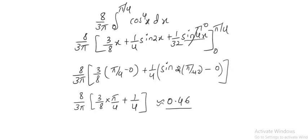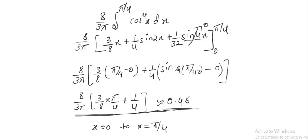This is the probability of finding the particle from x equals 0 to x equals pi by 4. That is it for now. If you have any doubts, please let me know in the comment box. Thank you for watching. Bye-bye.